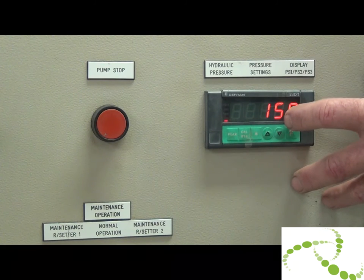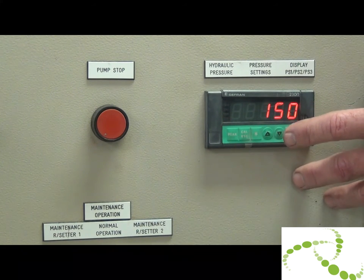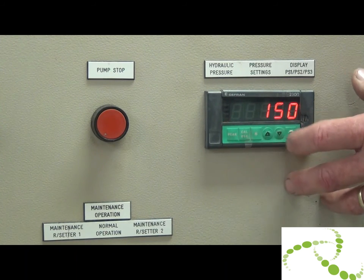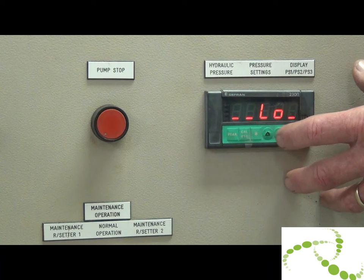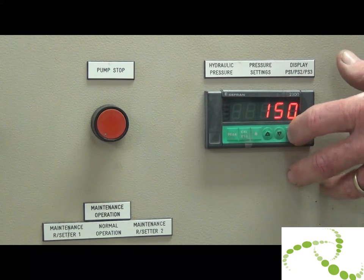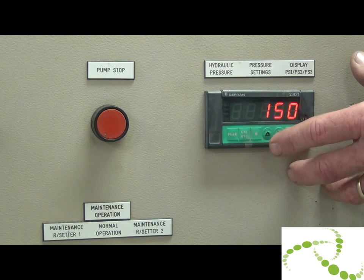F key again, 150 bar. That is retract for both rivet setter number 1 and rivet setter number 2. Again press the up key to increase it, down key. 150 bar to 160 bar is probably normally enough.